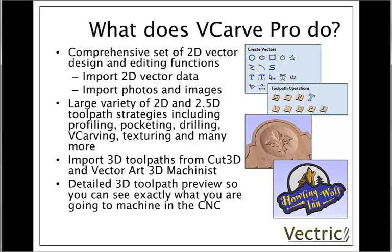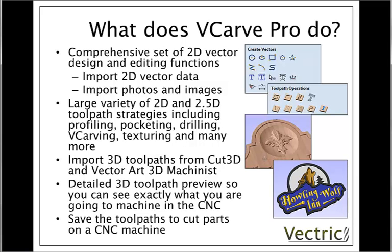Once we have our toolpaths, there's a really nice way to preview those, so we can see exactly what you're going to machine before you get to the CNC, in addition to the ability to add colours so you can get a realistic rendering, as shown in the last image on the slide. Once we're happy that our toolpaths look correct, we save those out to our CNC machine and run the part. In a moment, we'll expand on some of these steps when we look at the typical workflow for creating parts with the software.